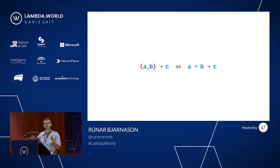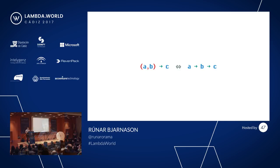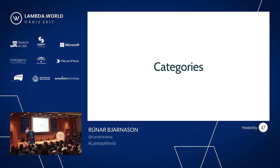It's pretty cool that all of this functionality naturally falls out of a simple isomorphism between curried and uncurried functions. That's an example of an adjunction in the category of Haskell types and functions.